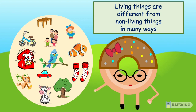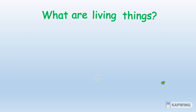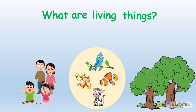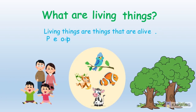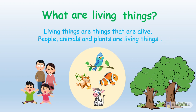Living things are different from non-living things in many ways. What are living things? Living things are things that are alive. People, animals and plants are living things.